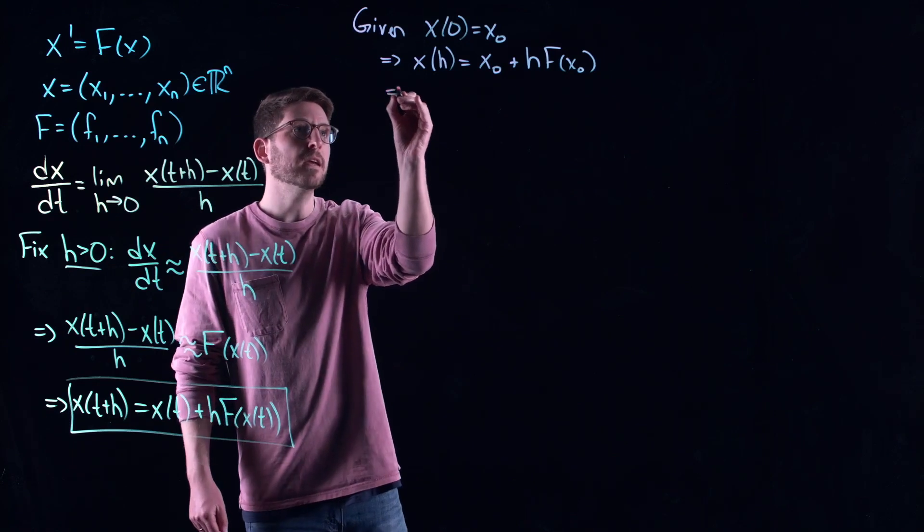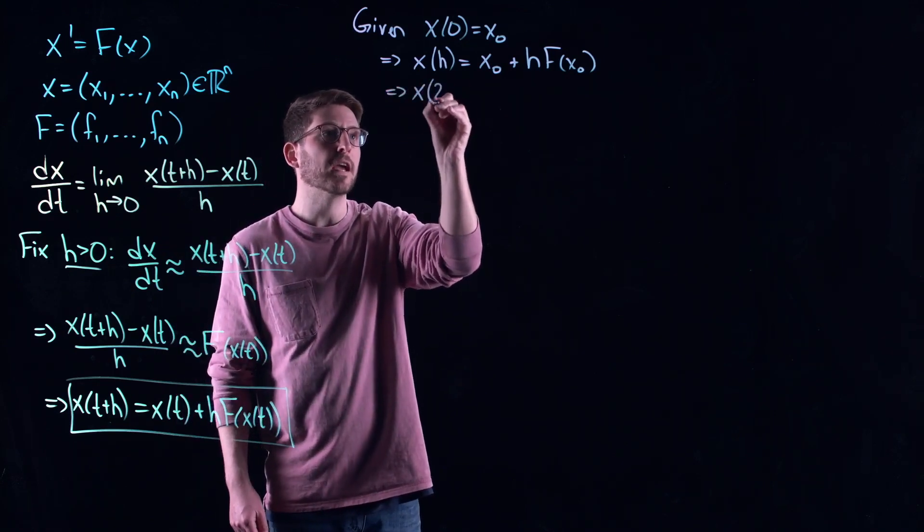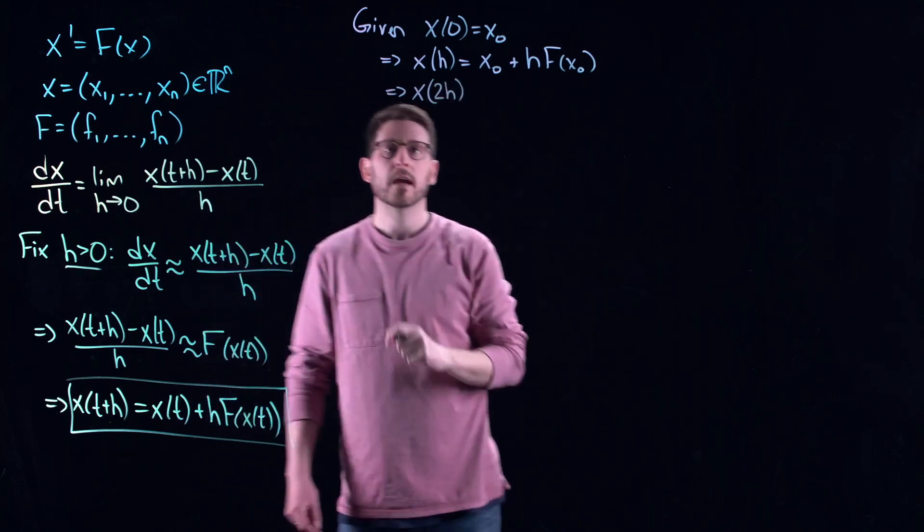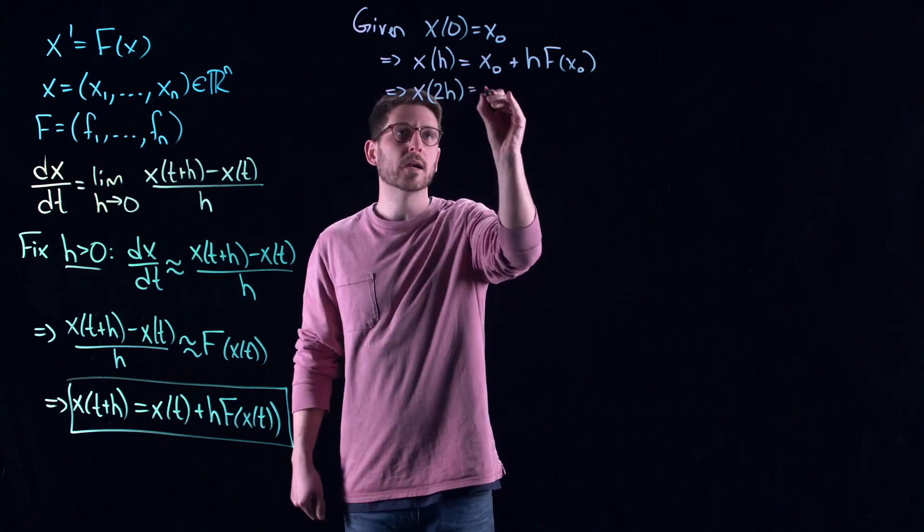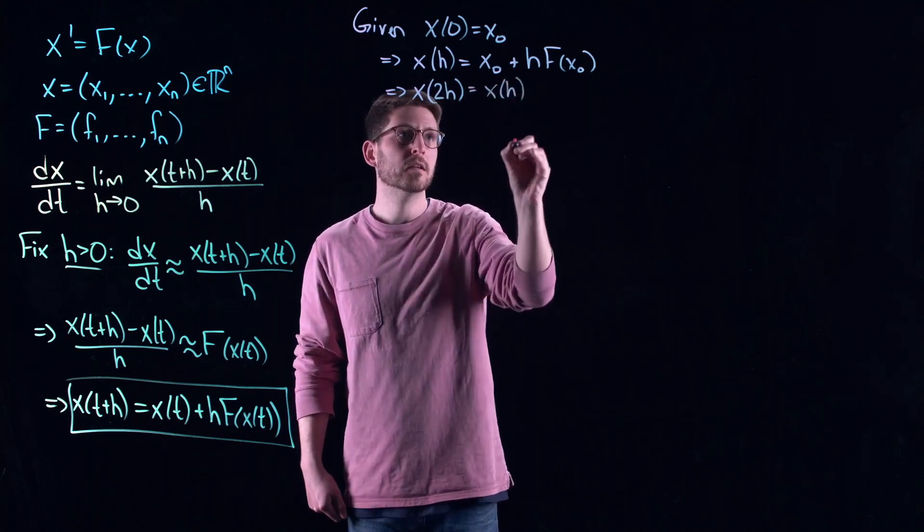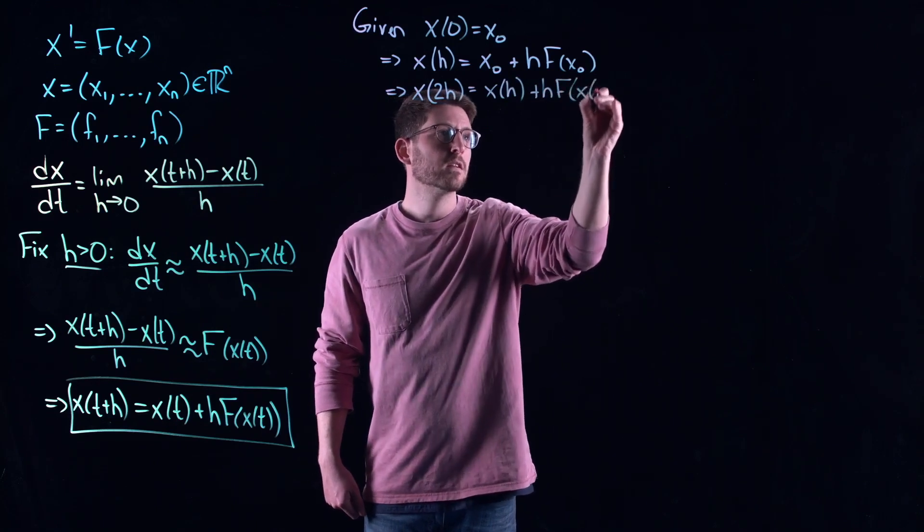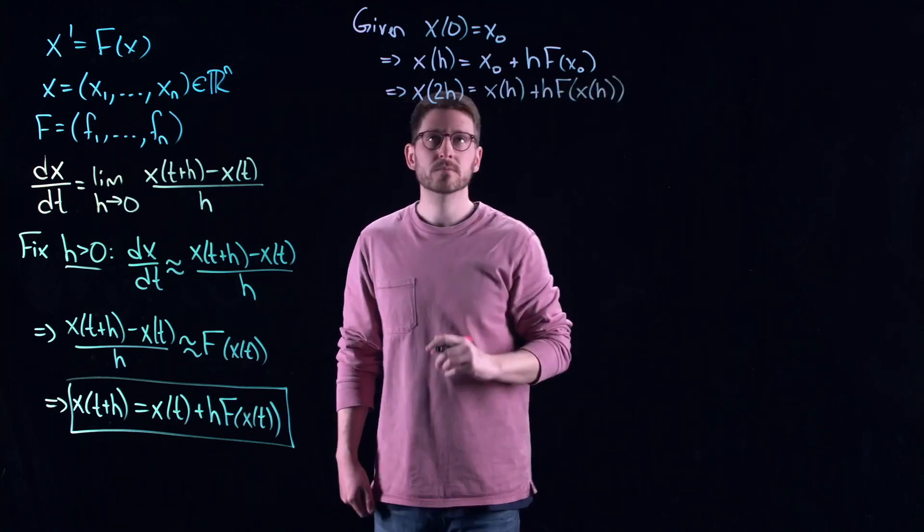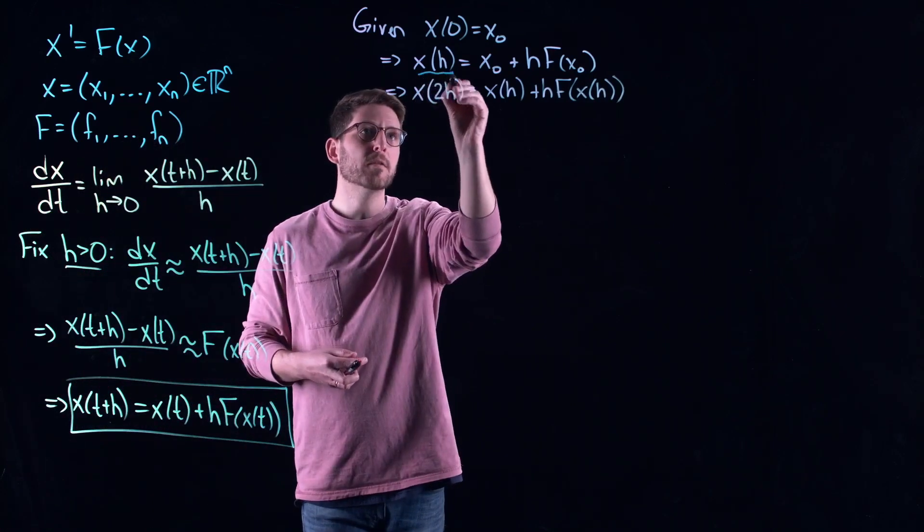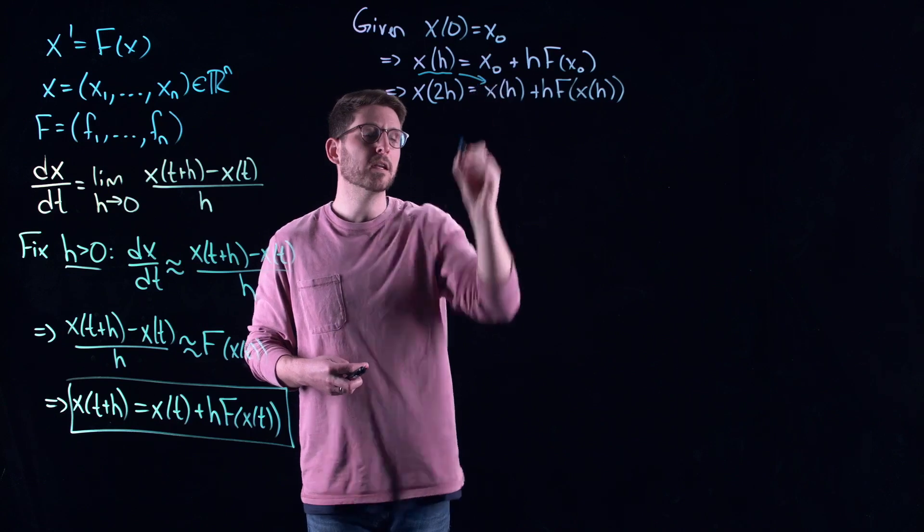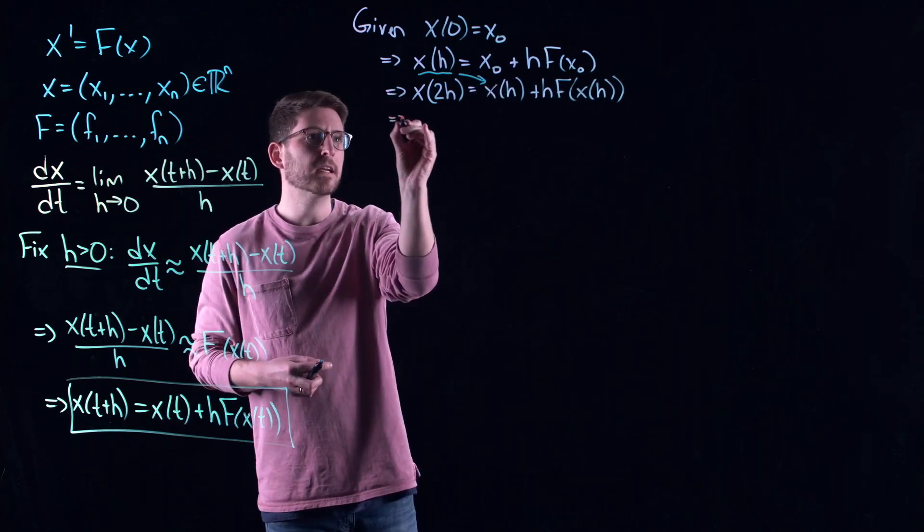Sometimes it's called the forward Euler method because we are going forward in time. h is pushing us a little step forward in time. It's saying if I know exactly what's happening at one instant in time, I can push myself forward to the next instant in time. Now, you can actually repeat this procedure. Let's imagine you're given an initial condition.